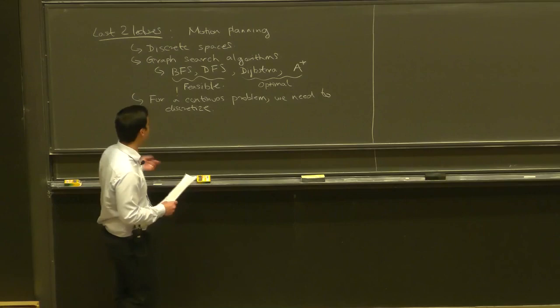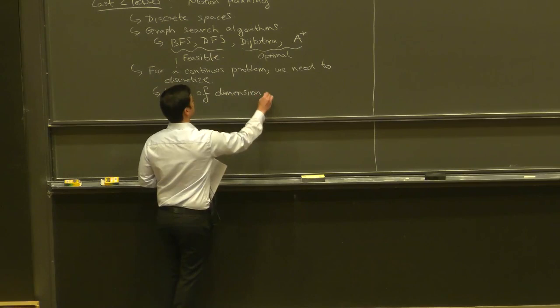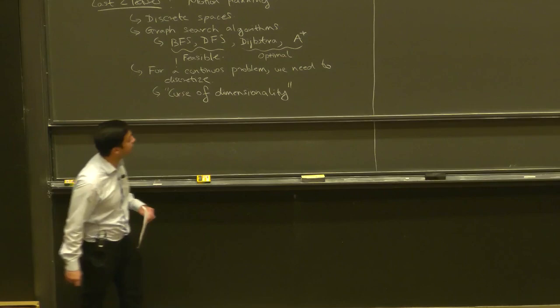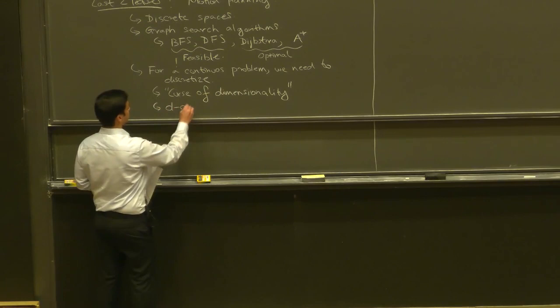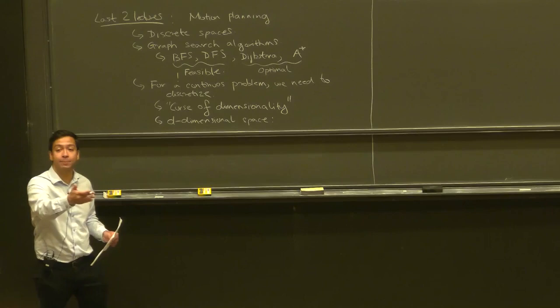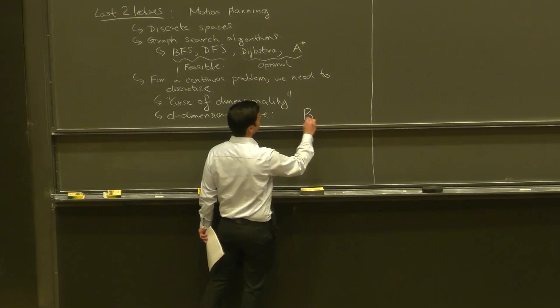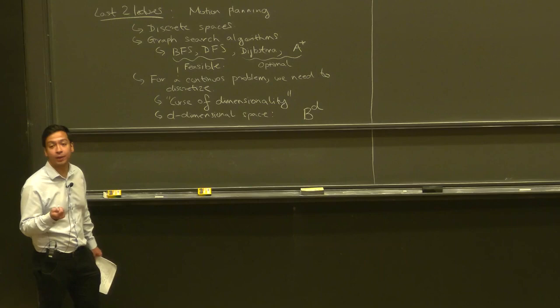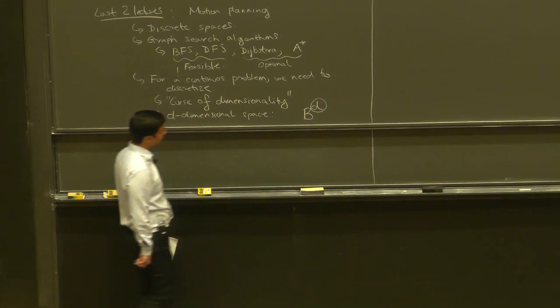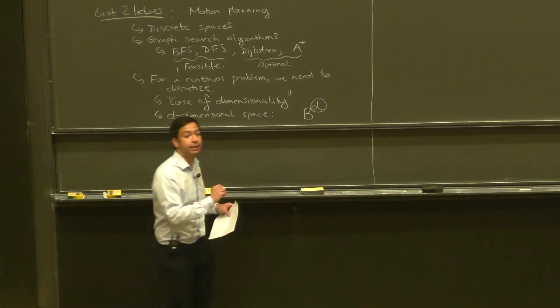Exactly right — there's a term called the curse of dimensionality. Imagine you have some d-dimensional space that you're discretizing, and you discretize each axis with b bins — b points along each axis. You're going to end up with b to the d points in your graph search problem. This is exponential in the dimension. So a two-dimensional space gives b squared, three-dimensional gives b cubed, and so on.